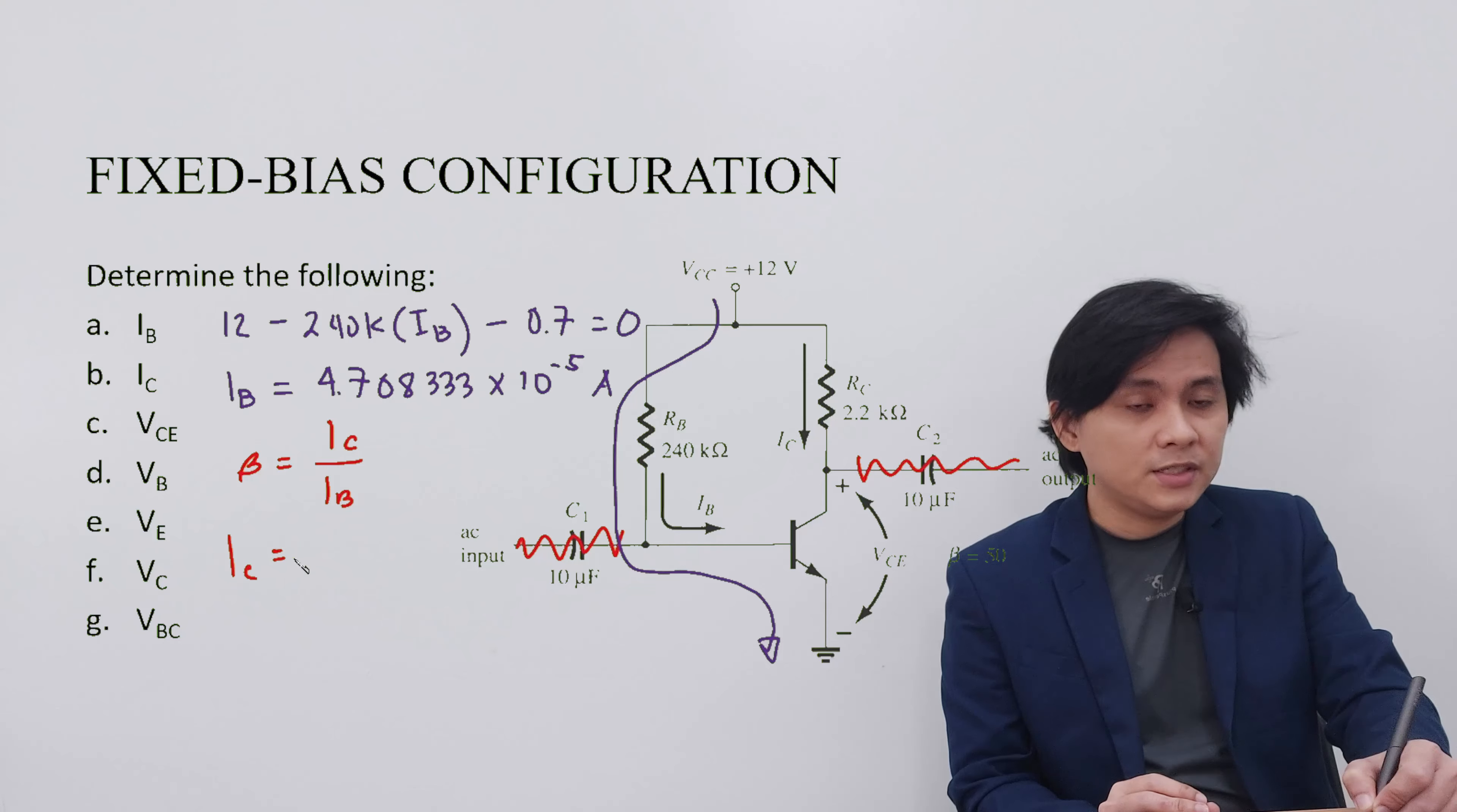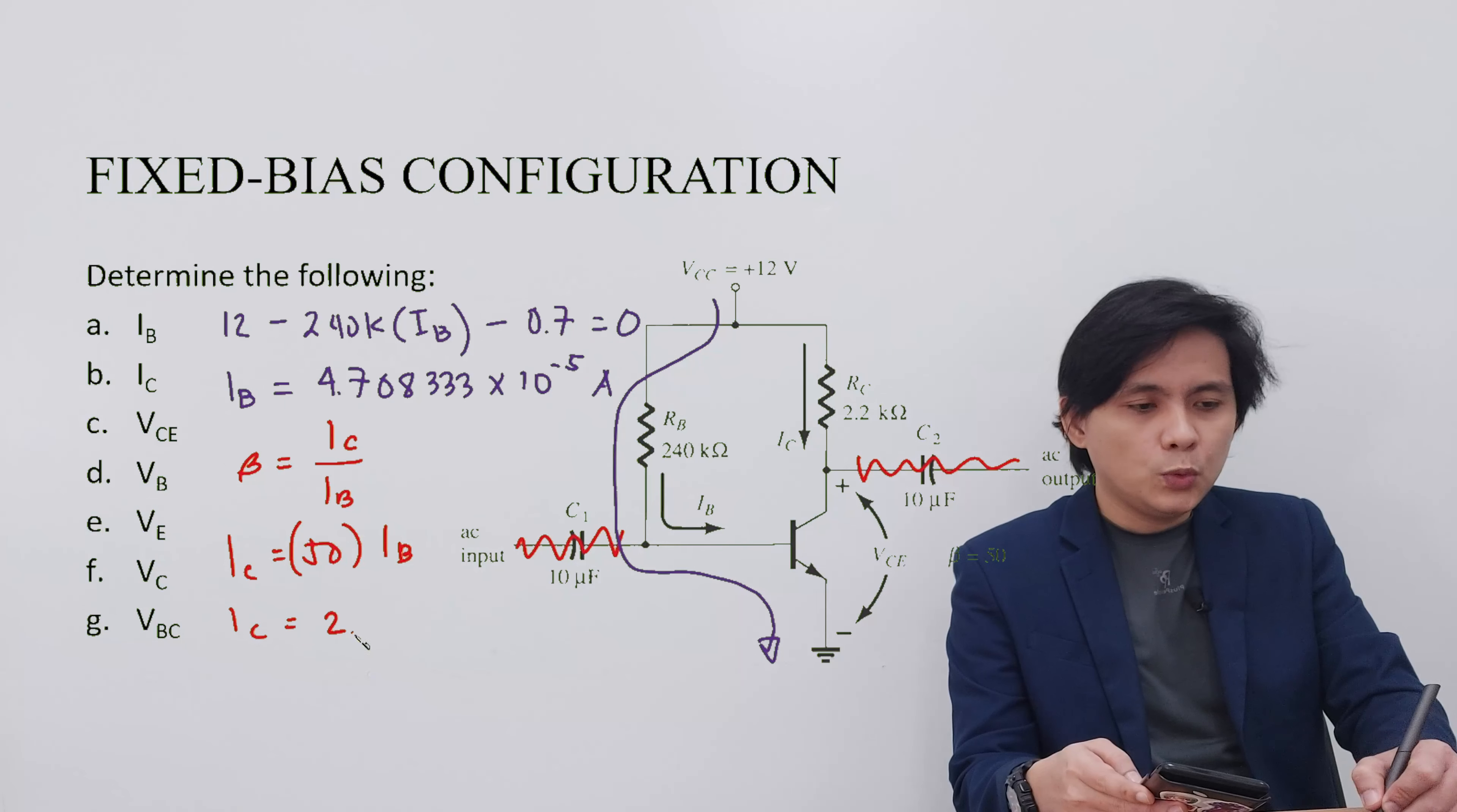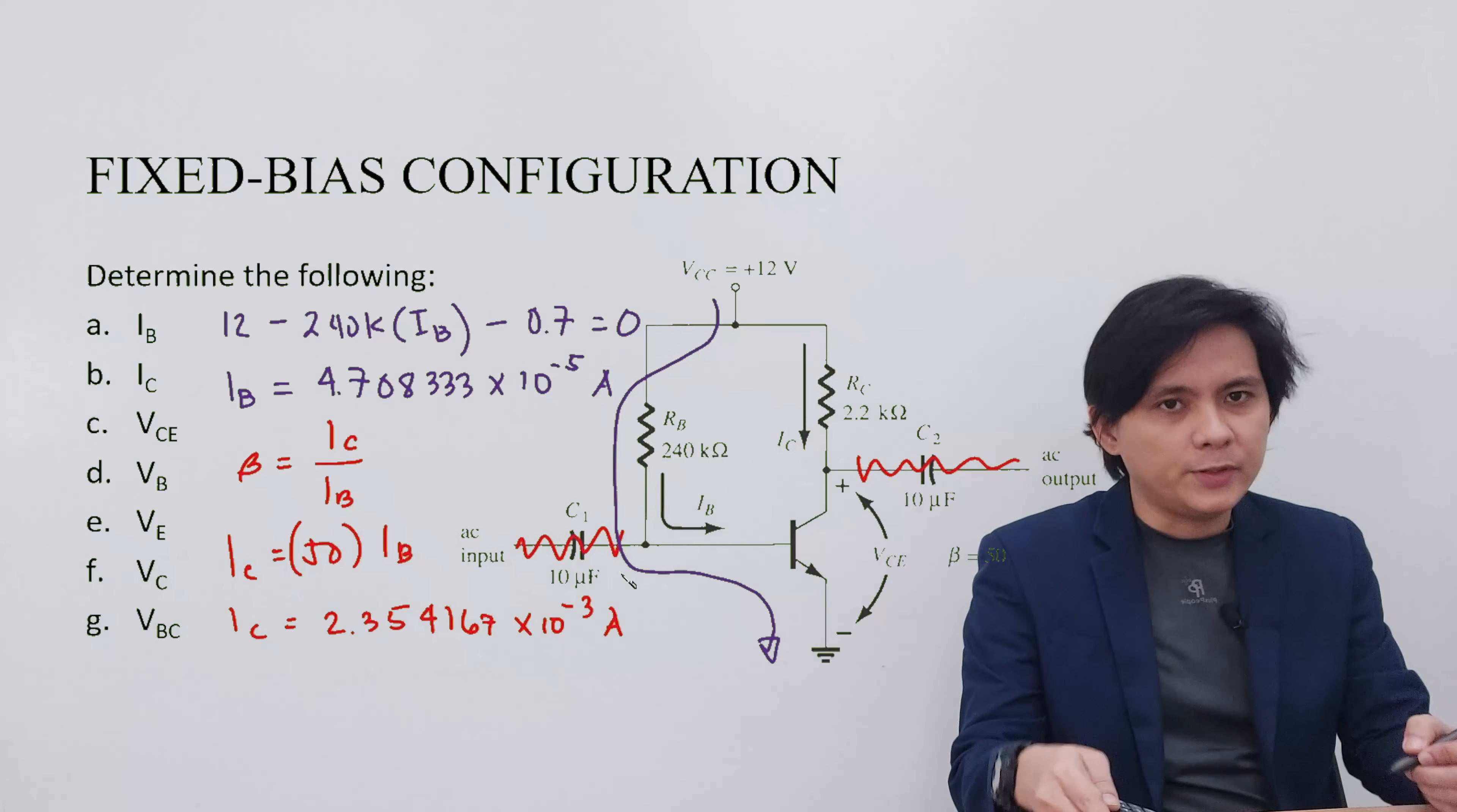Therefore, our IC is equivalent to beta, which is 50, multiplied by the value of IB. IC is equivalent to 2.354167 times 10 to the negative 3 amperes.